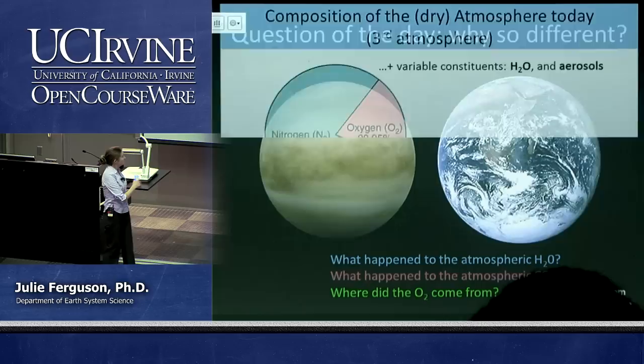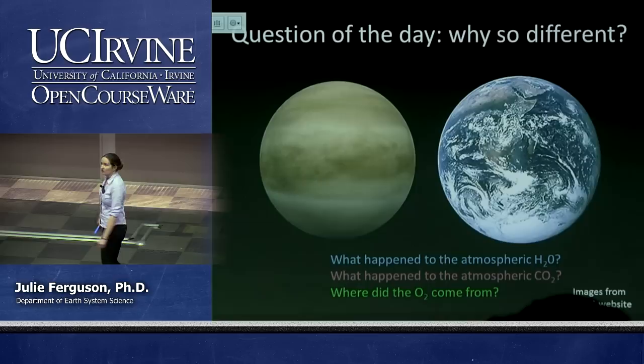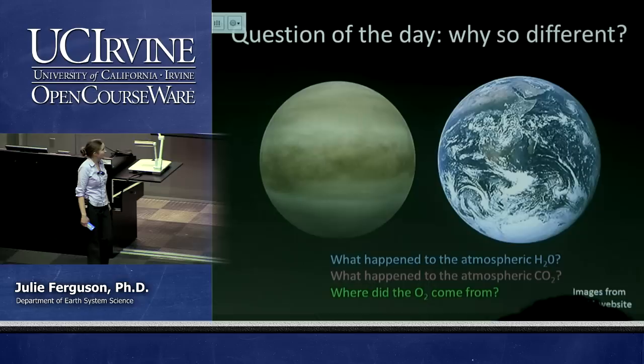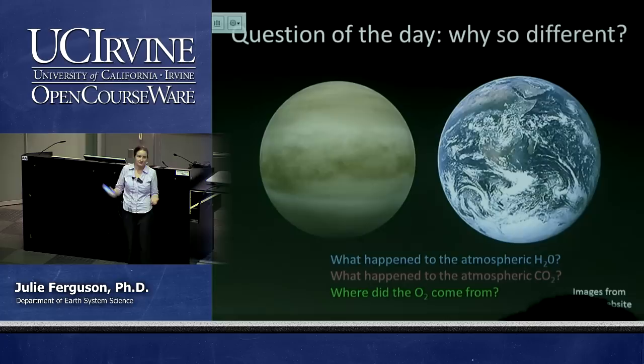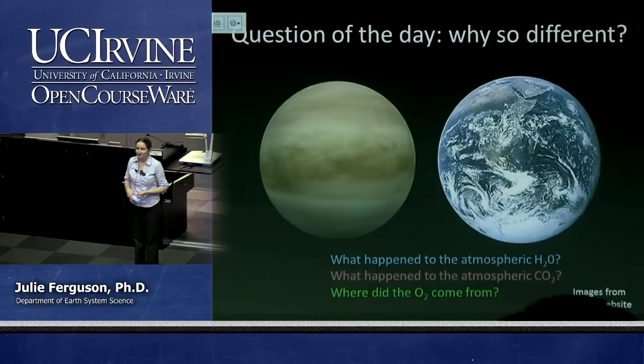I have a few questions for you. What happened to that atmospheric water? What happened to the atmospheric CO2 — where is that carbon today? And where did the oxygen come from? Take three or four minutes to think about this with your neighbours. Where is water today on Earth — the most obvious answer. What happened to atmospheric CO2 — that's a more difficult one. Where do you find carbon today? And where did the oxygen come from?